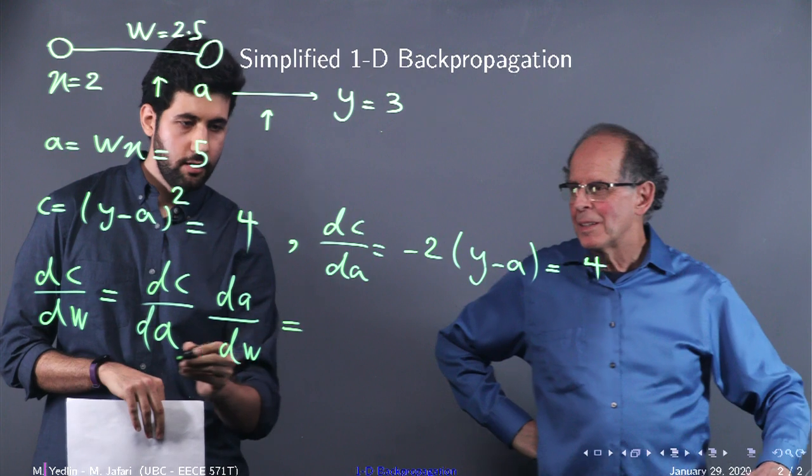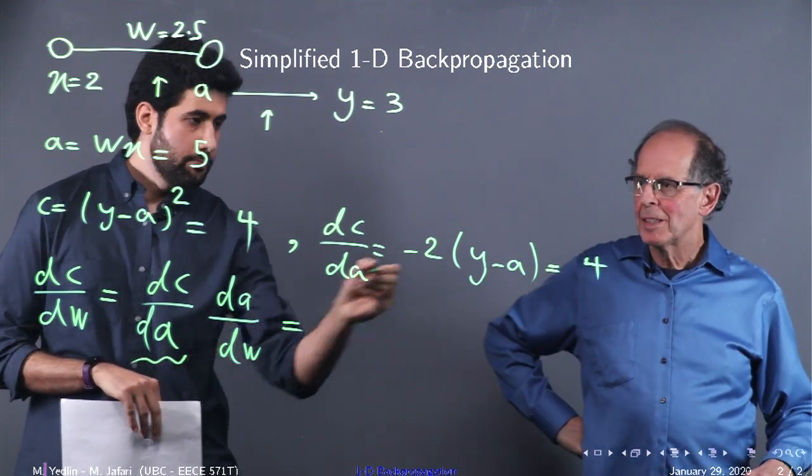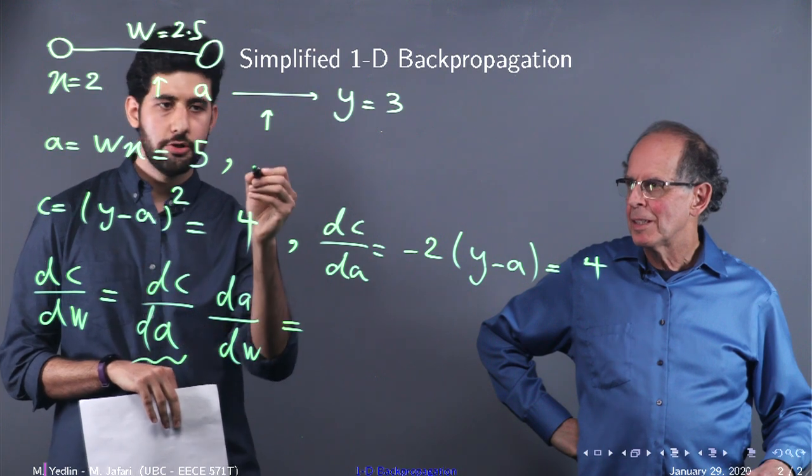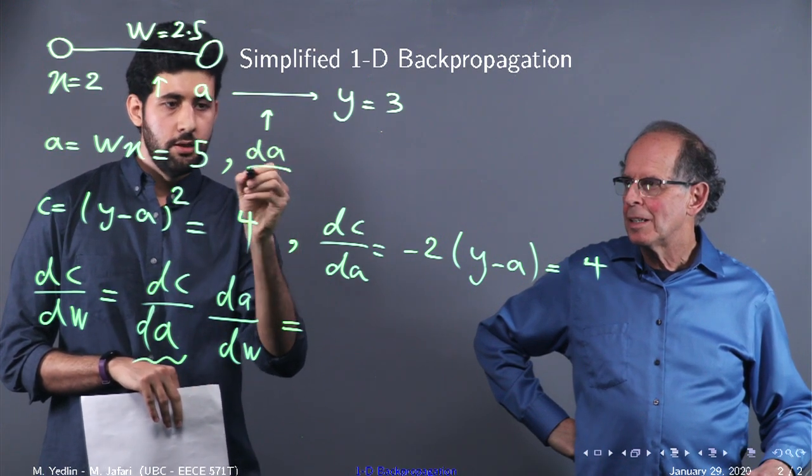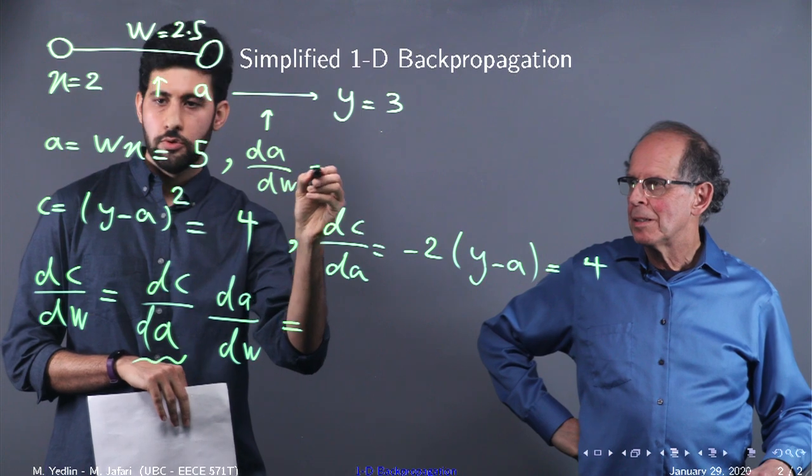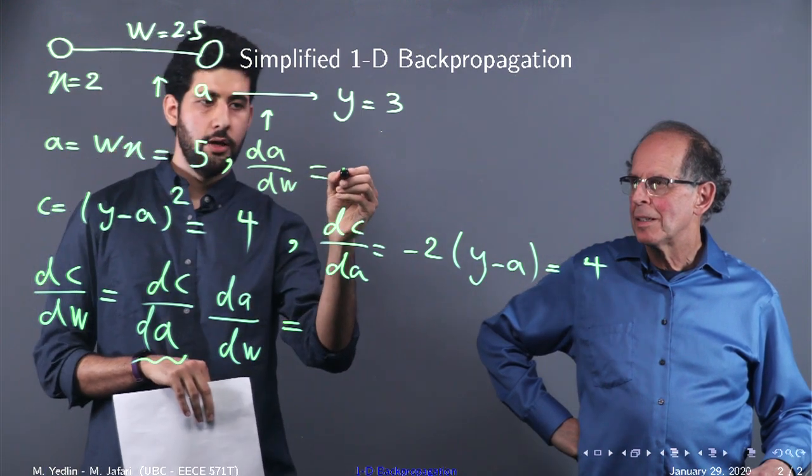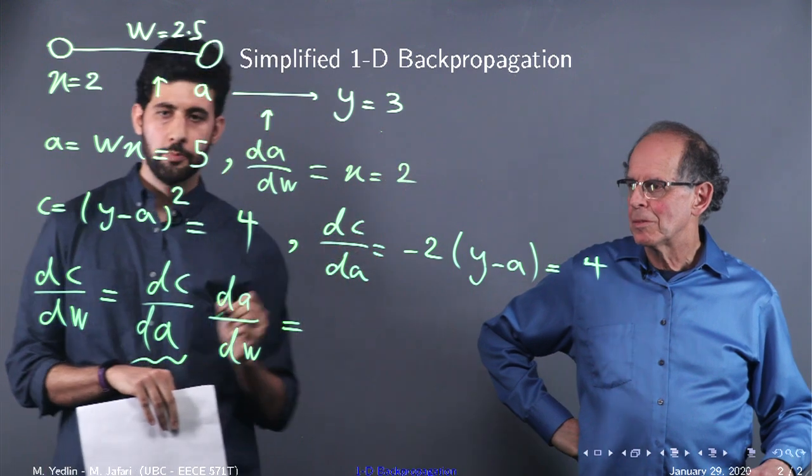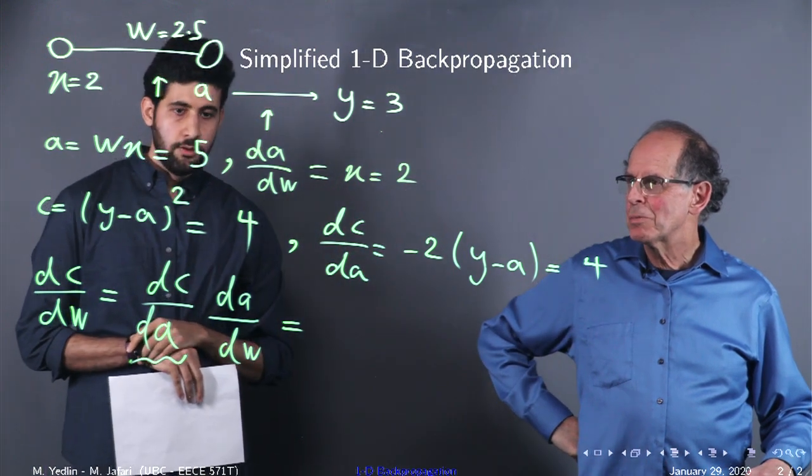So, we have this part pre-calculated, and for this part, we can calculate it here, D of A, D W, which is X equal to 2. 2. Okay. Now we substitute in. Yeah.